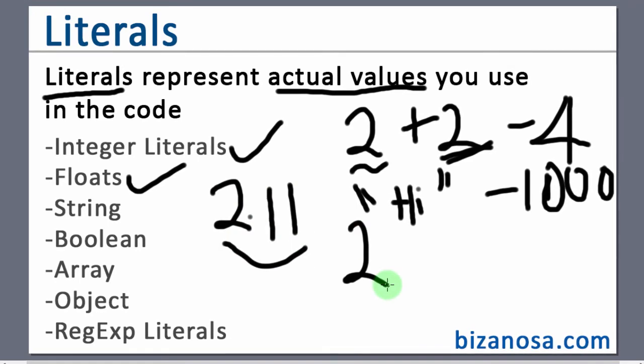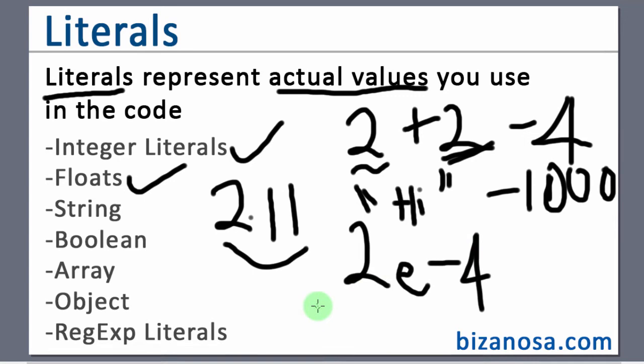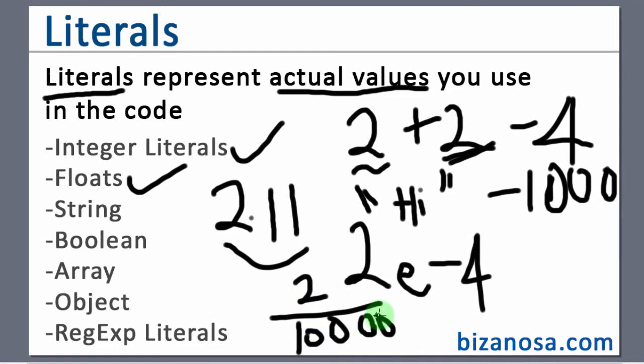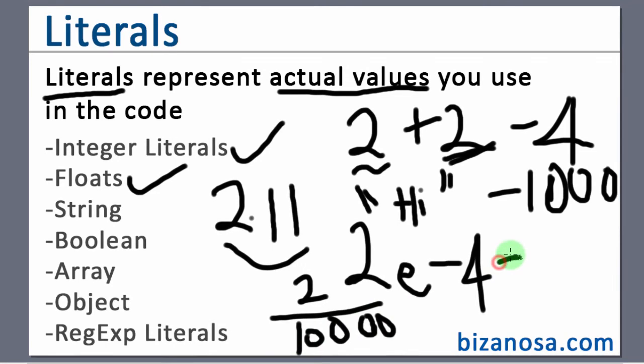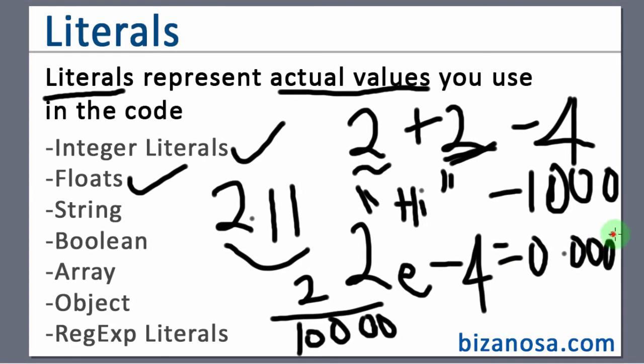It can also be in the form of an exponential. So 2 exponent or exponential over maybe 4. This is the same as 2 over 1, which essentially is the same as 0.00, then another 0 there, 2.